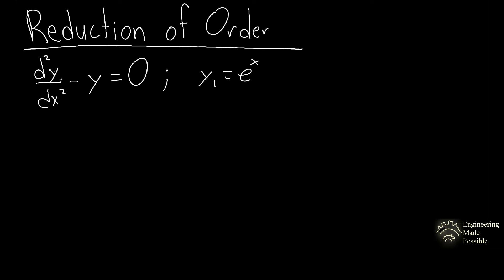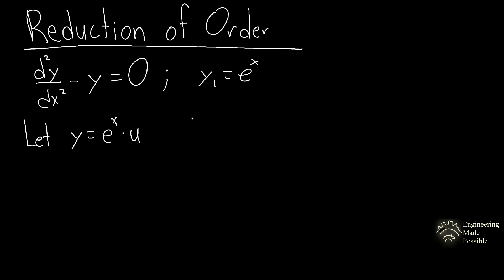For our first example, we have d²y/dx² minus y equals 0. One of the solutions of this differential equation is given as y₁ equals e^x. For the first step, you multiply by a variable we introduce, u.